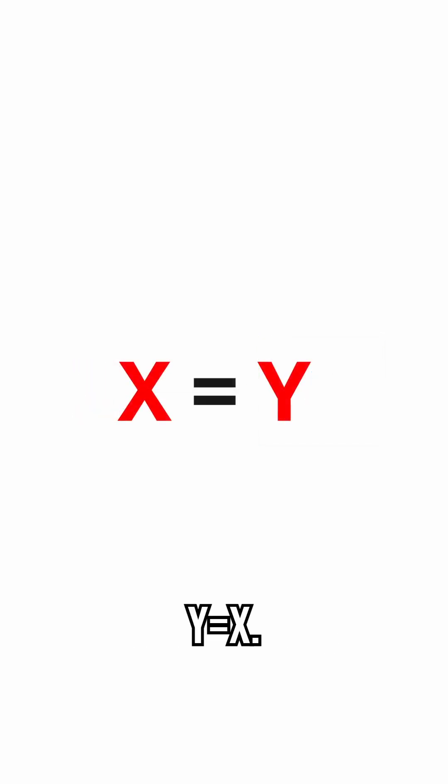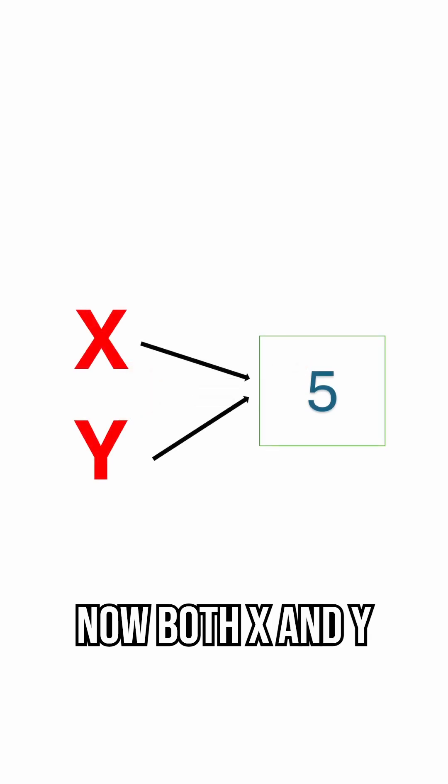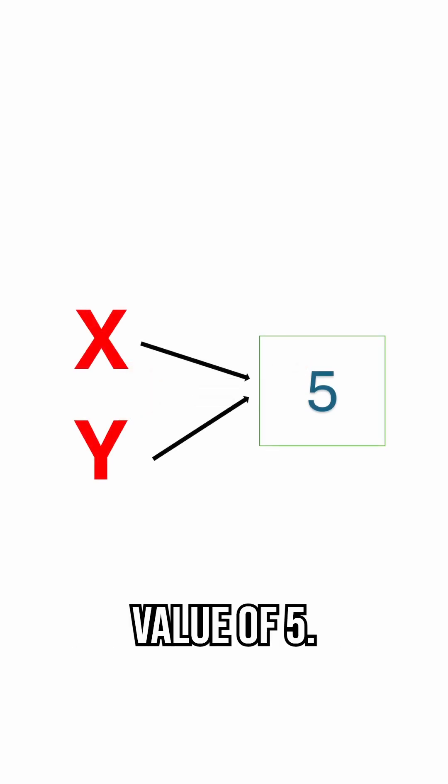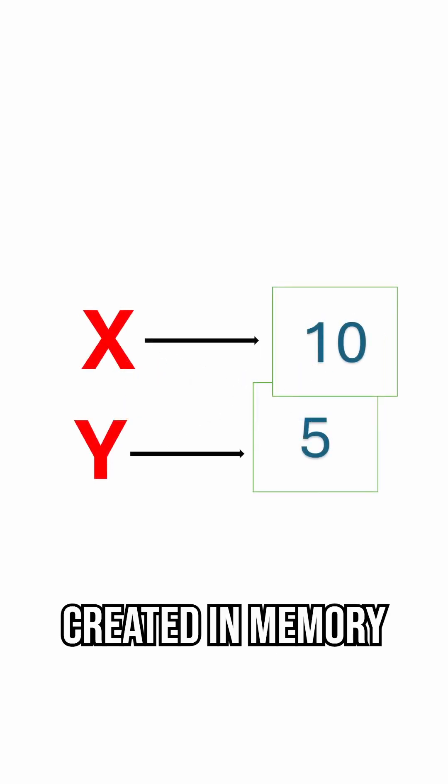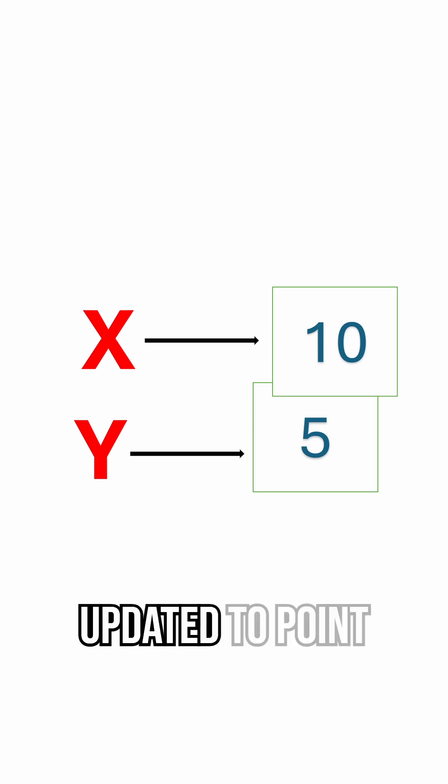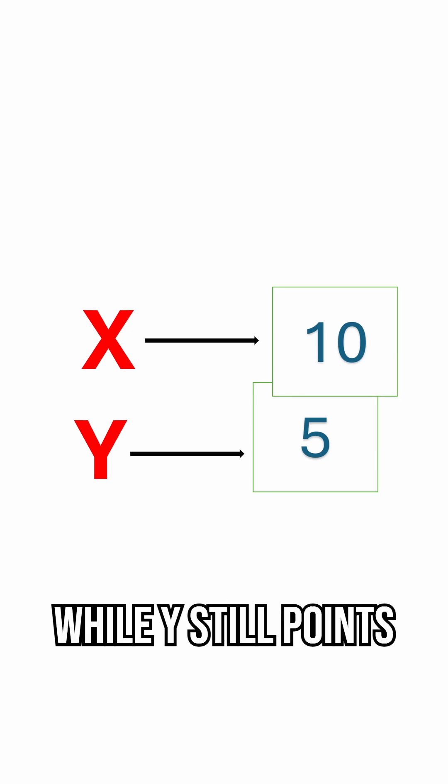For example, y equals x. Now both x and y point to that single value of 5. If you later change x to 10, a new object is created in memory for 10, and x is updated to point to it, while y still points to 5.